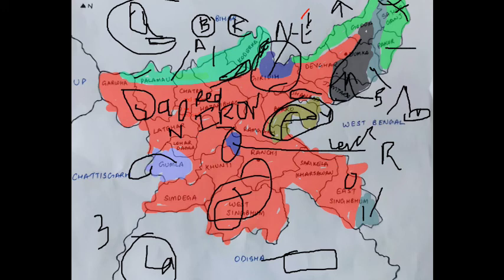Mica soil is light pink in color. It is found in Koderma, Hazaribagh, and the central parts of the Ranchi plateau.